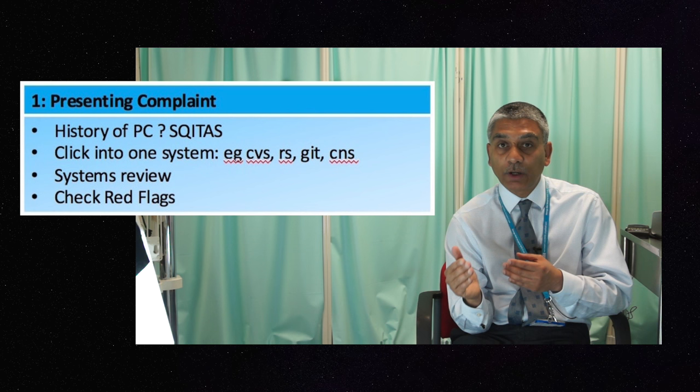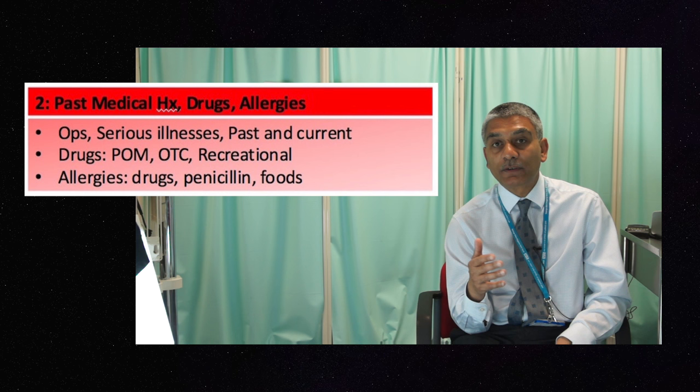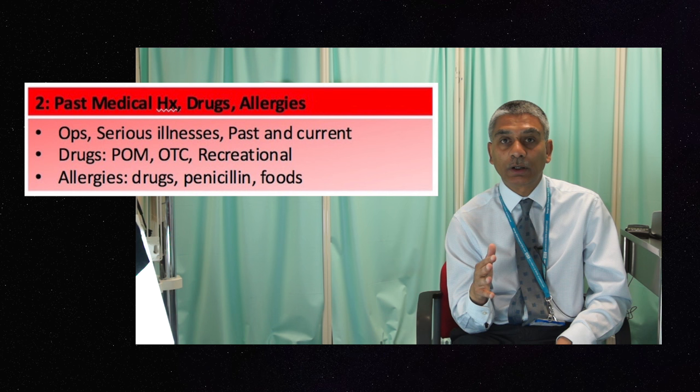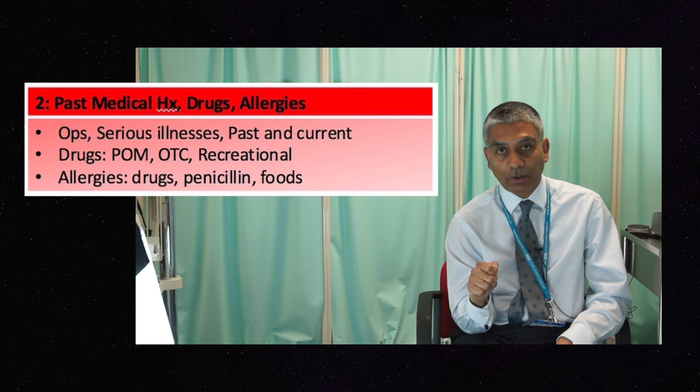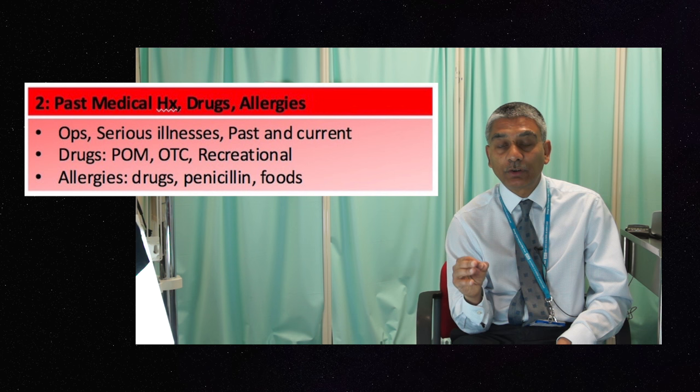The next frame is the past medical history. We would ask about operations and any other significant serious conditions. We would also ask about drugs, as they are often related to the past medical history, including over-the-counter and recreational drugs. We would then check allergies and food intolerances, ascertaining the nature of any reaction — for example, to penicillin.